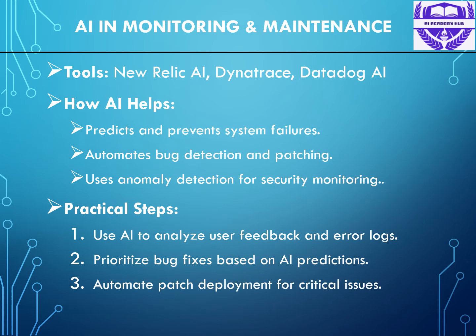Once your software is live, maintenance becomes key. AI can help by predicting bugs and suggesting updates. AI-powered monitoring tools like Dynatrace, New Relic AI, and Datadog AI provide real-time system performance insights. Anomaly detection identifies issues before they impact users, enabling proactive troubleshooting. Automated bug detection and self-healing capabilities reduce manual intervention and improve uptime, helping organizations maintain stable and high-performing applications.